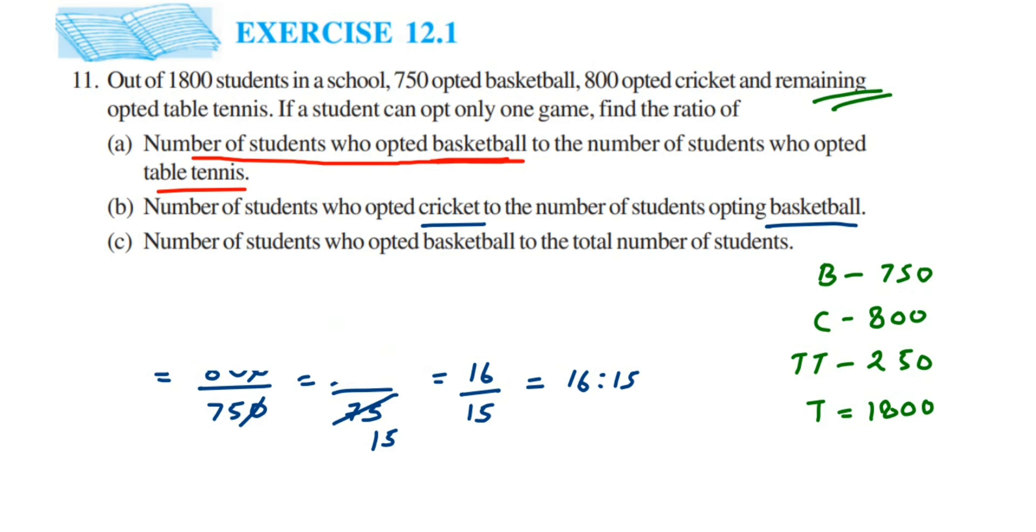Now let's go to the last one, third question. Number of students who opted basketball, so basketball is 750, is to total number of students which is 1800. So convert this into fraction, 750 divided by 1800. Cancel the zeros, so we're left with 75 by 180.